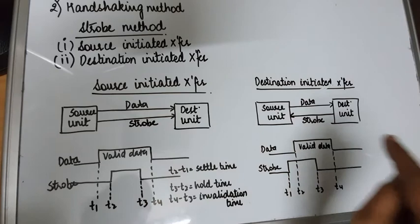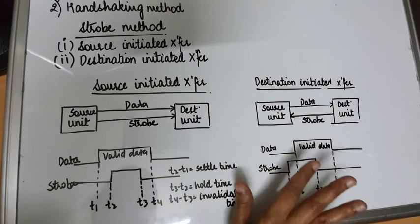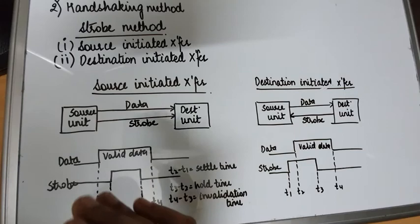Because of these disadvantages of the strobe method, we will now study the handshaking method.